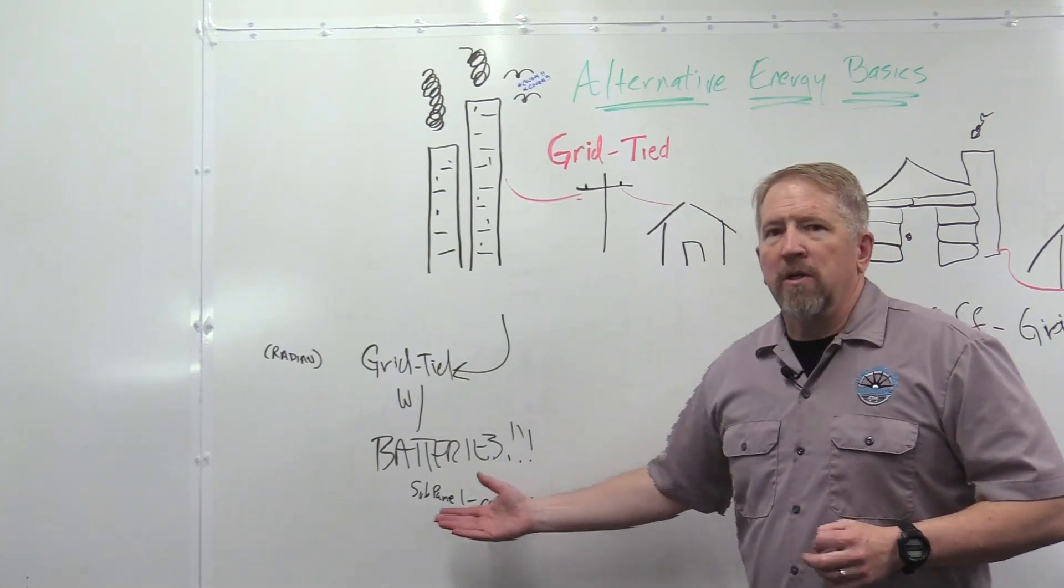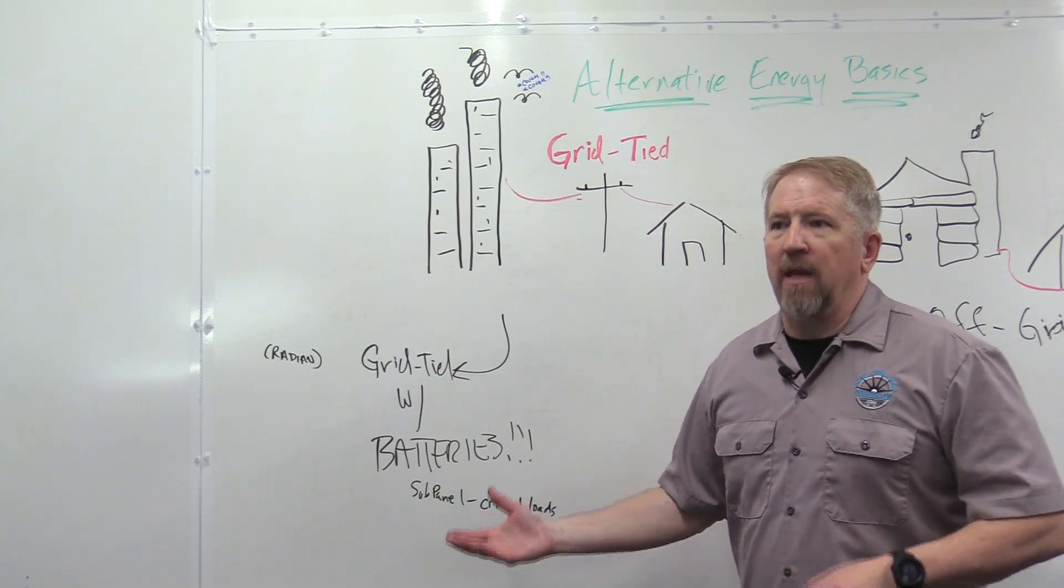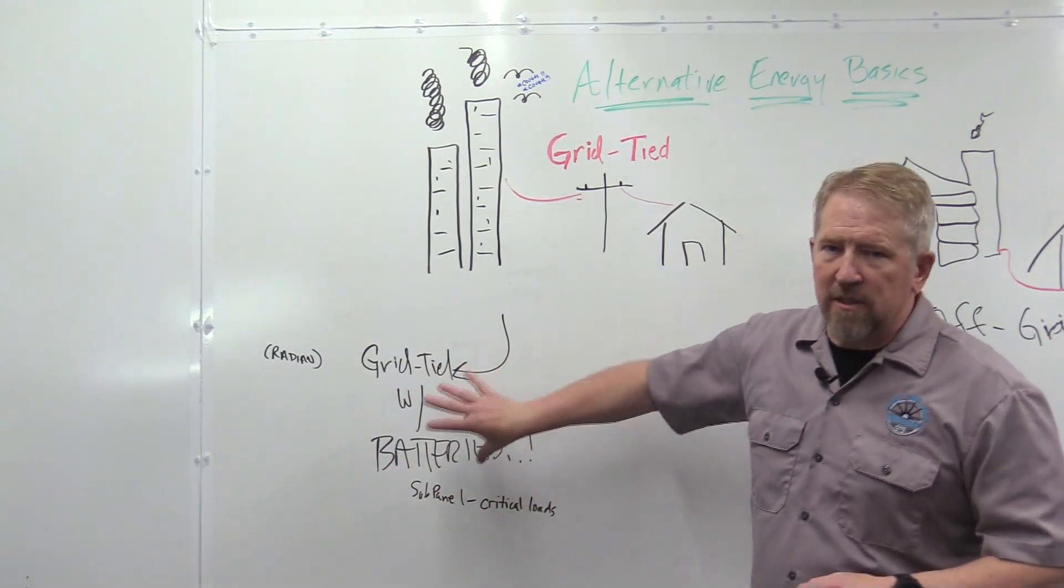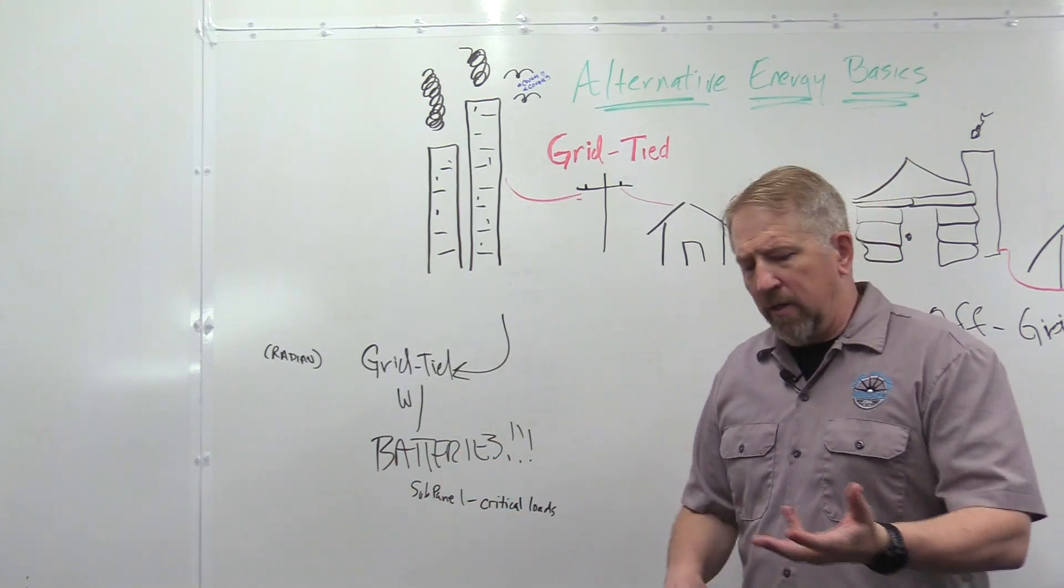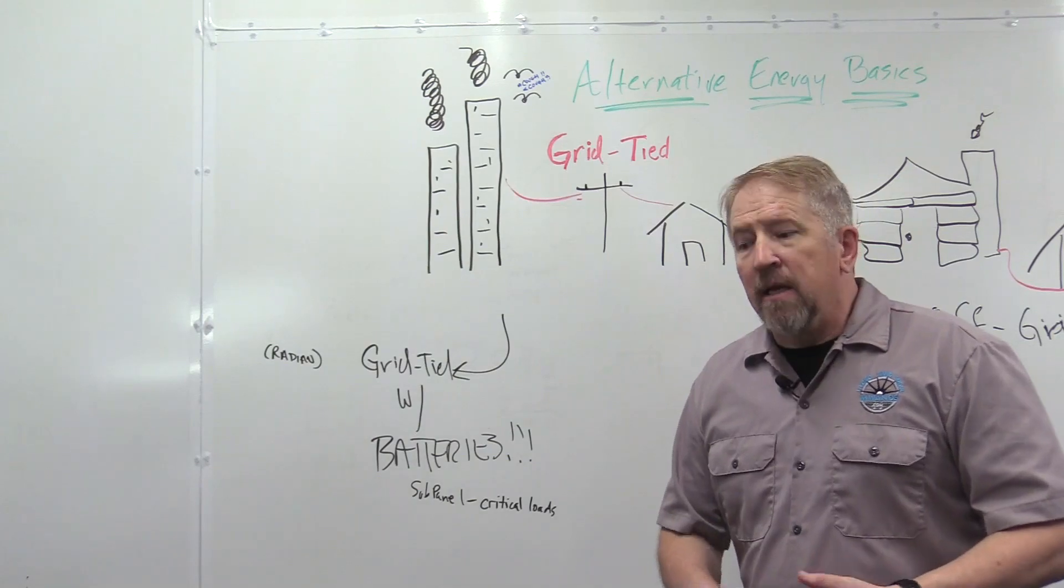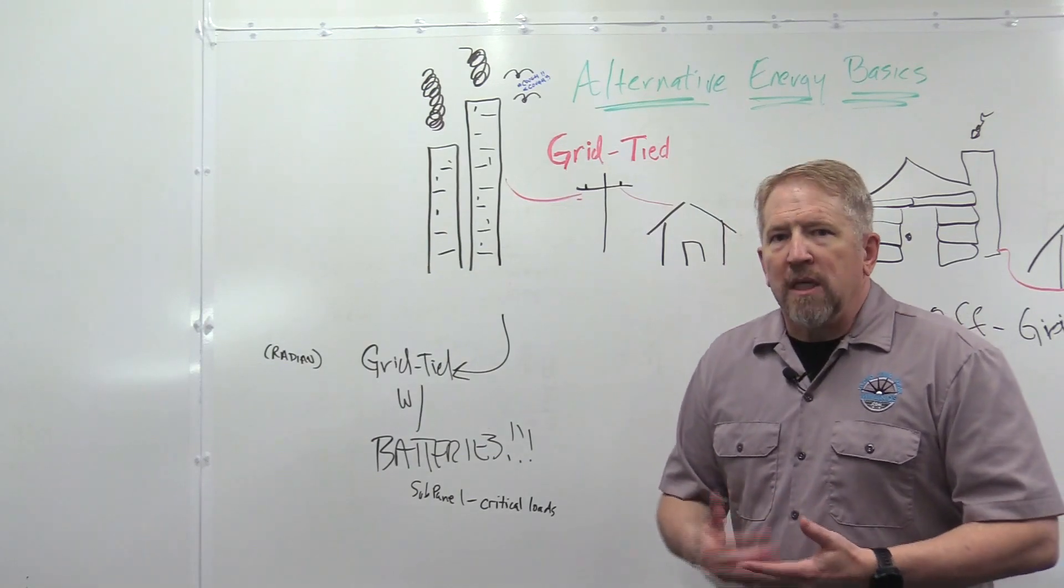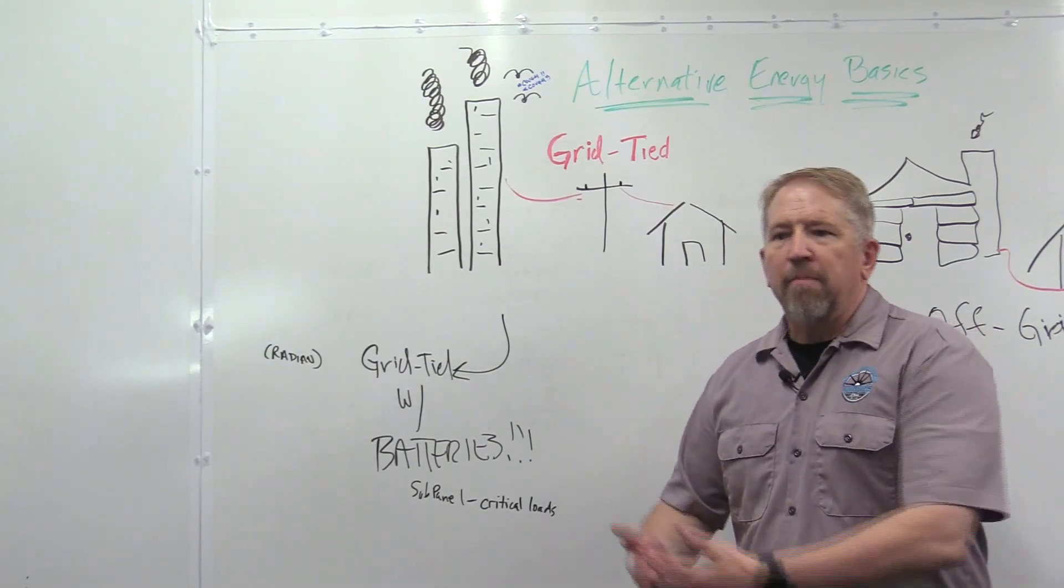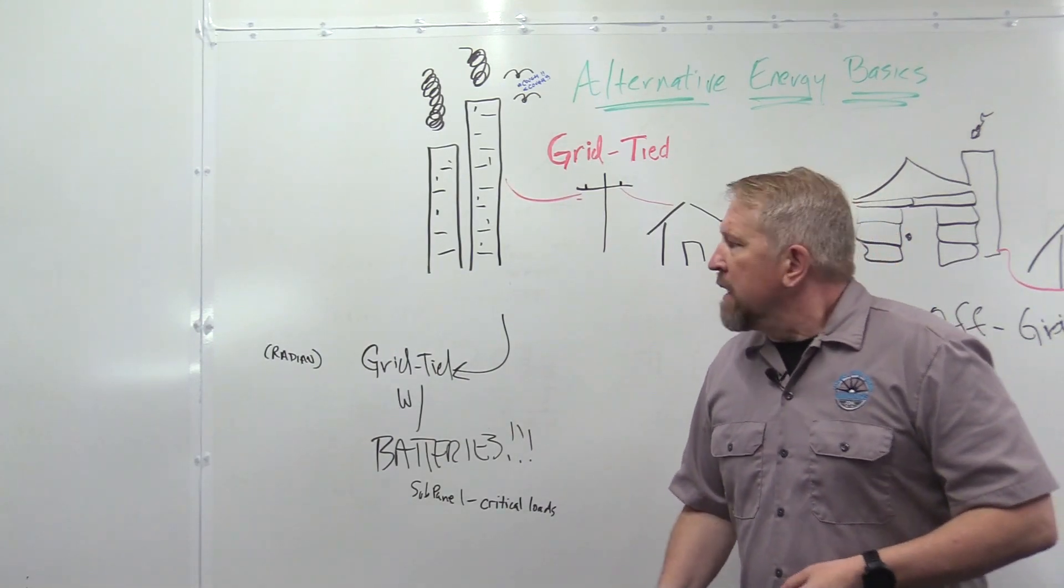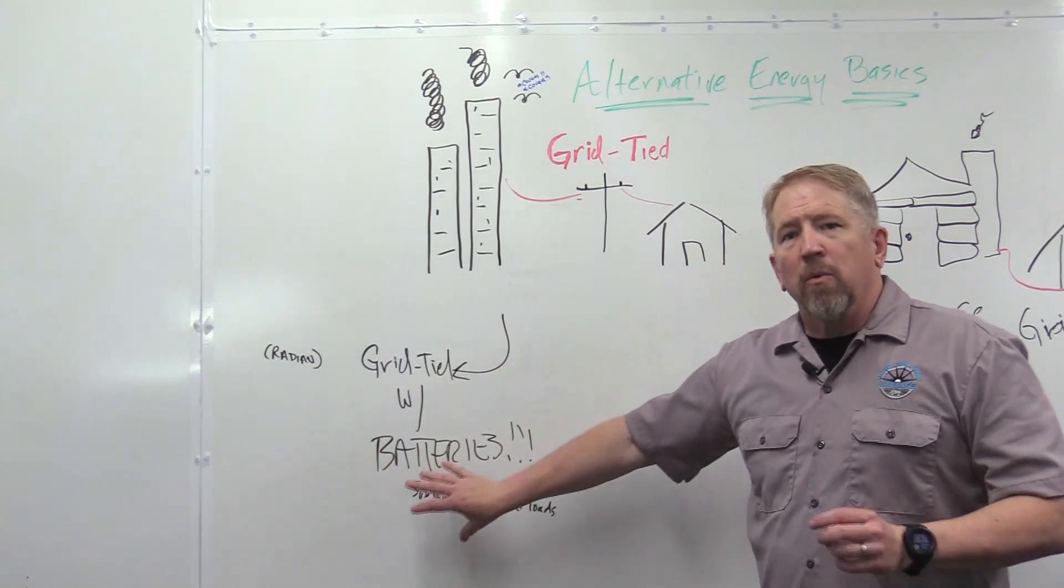And so what you want to do is have a different sub-panel where you have critical loads that are then wired into this situation. And so it would be stuff like your refrigerator. Something if you had a medical device like a CPAP or something like that. And things that you need to make sure that you have power while you bridge this time period while they're getting the grid back up. And so this is really kind of the best of both worlds.